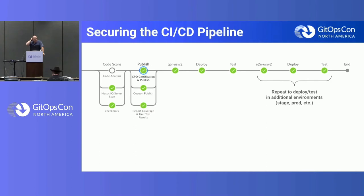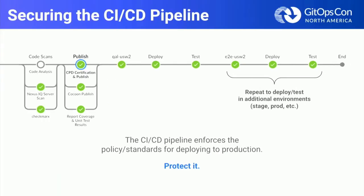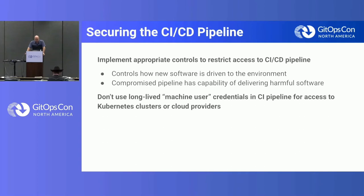Here's a typical CI/CD pipeline. The CI/CD pipeline defines your policies and standards for deploying to production — this is how you enforce your engineering process. You want to protect it; you don't want that pipeline to be bypassed or compromised. It's codifying what you think requires quality software to be deployed to production. You want to restrict who has access and who can make changes, because if that pipeline is compromised, it can deliver harmful or buggy software. For your CI pipeline in particular, don't use long-lived machine user credentials for Kubernetes clusters or cloud providers — use short-lived credentials.